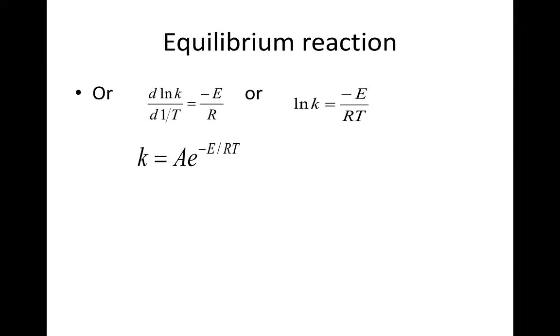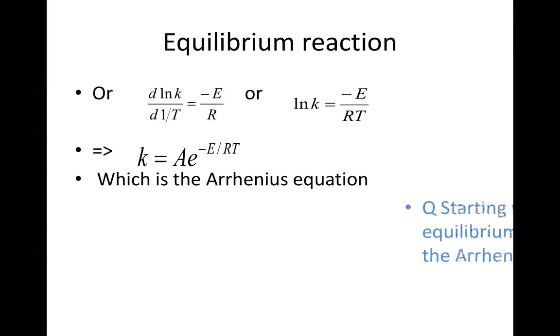Or d natural log of K over d 1 over T is equal to minus E over R, or natural log of K is equal to minus E over RT, or better still, in the way we always know it, K is equal to A e to the minus E over RT. This of course is the Arrhenius equation.